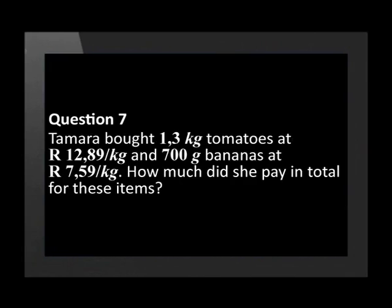Question seven asks us to calculate a cost related to mass. Tamara bought 1.3 kilograms of tomatoes at 12 rand 89 per kilogram, and 700 grams of bananas at 7 rand 59 per kilogram. How much did she pay in total for these items?